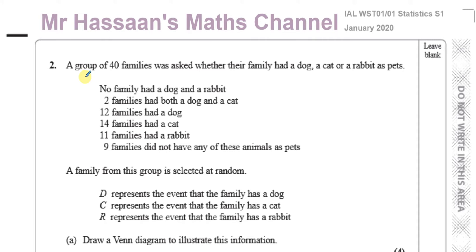Here we have a question about a group of 40 families that was asked whether their family had a dog, a cat or a rabbit as pets. There was no family that had a dog and a rabbit both at the same time. Two families had both a dog and a cat, 12 families had a dog, 14 families had a cat, 11 families had a rabbit, and 9 families did not have any of these animals as pets.